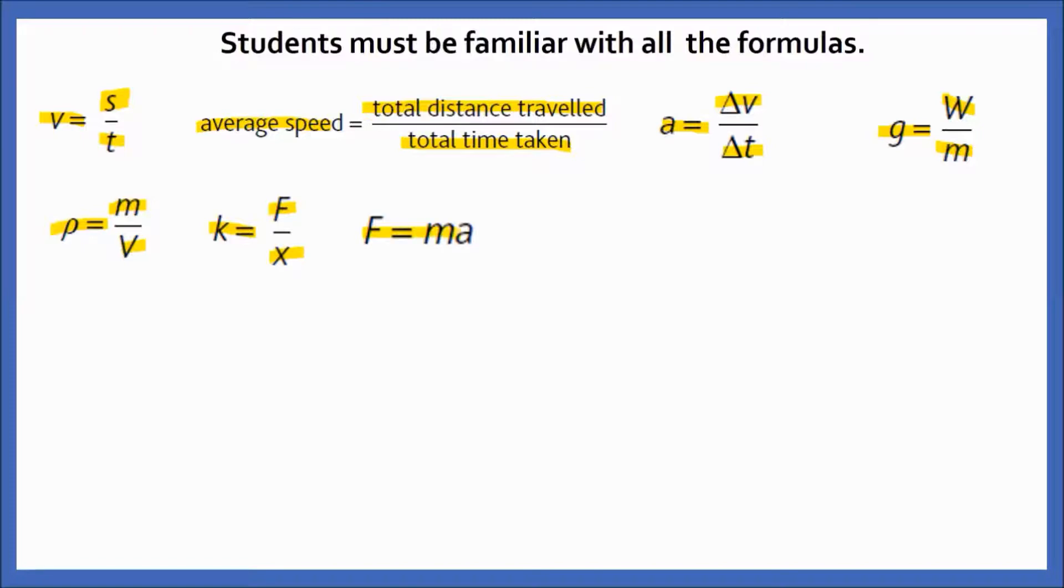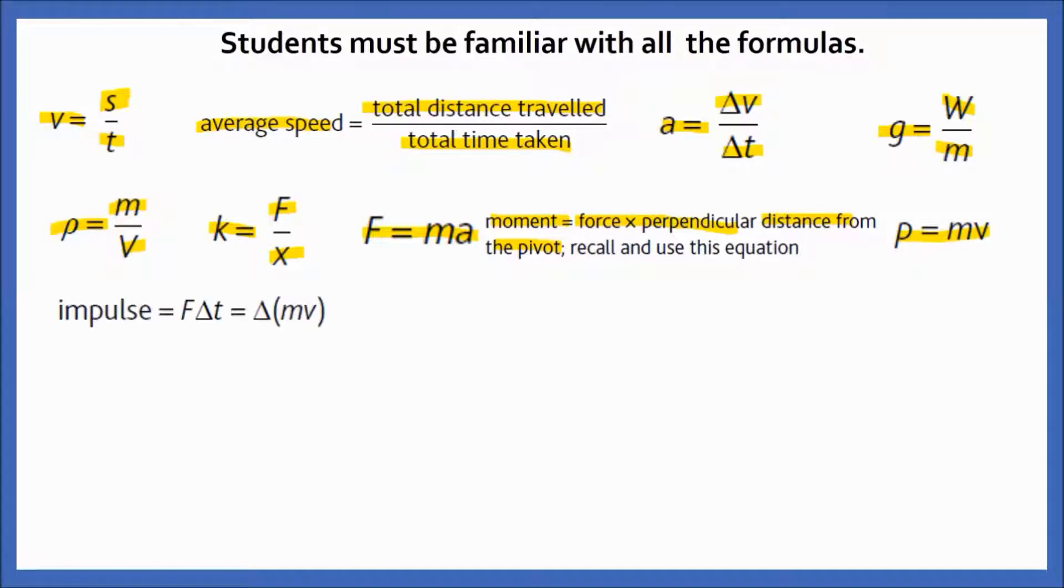Hooke's law equation: spring constant K = F/x. Newton's second law equation: F = ma. Moment = force × perpendicular distance from the pivot. Momentum: p = mv. Impulse formula = Ft = Δ(mv). Resultant force = Δp/Δt. Kinetic energy = ½mv². Potential energy = mgΔh. Work done formula is W = Fd = ΔE.